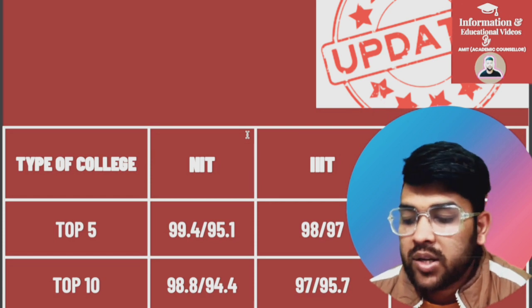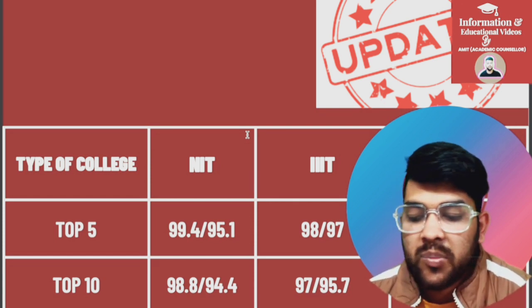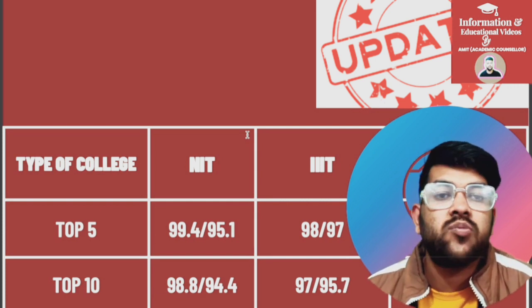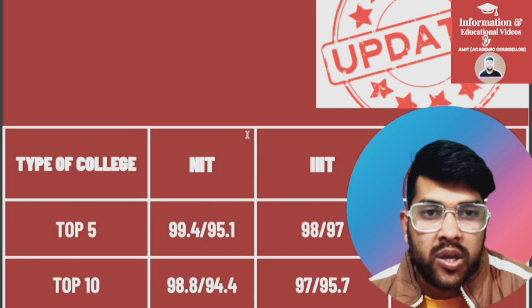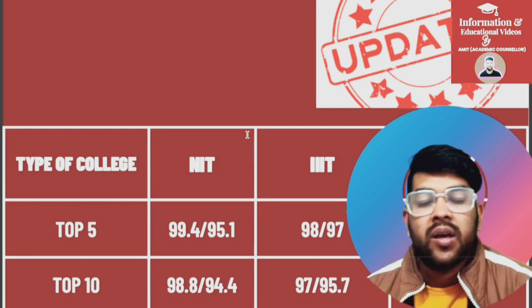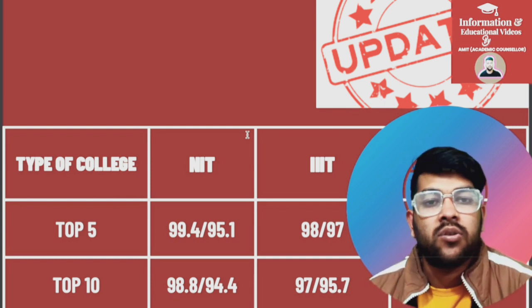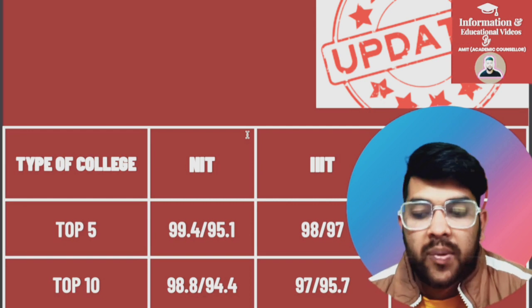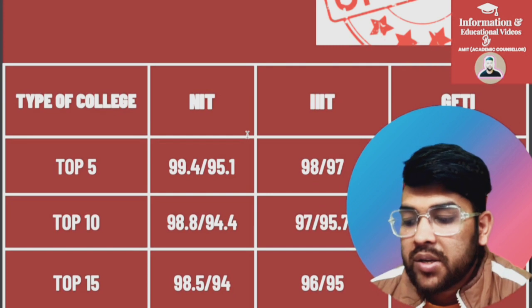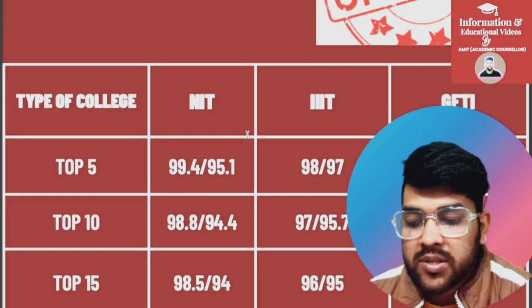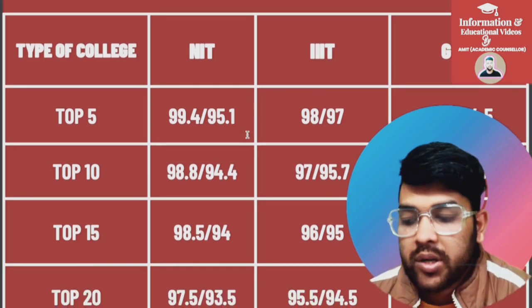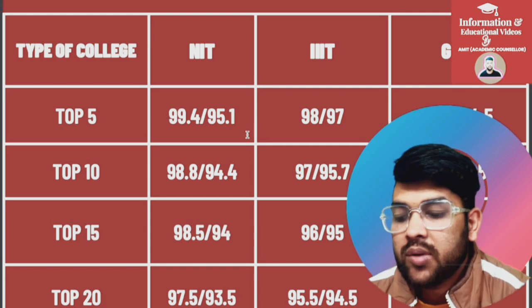For top 10 NITs, it is 98.8 and 94.4 percentile (CSE slash lower branch). For Triple IT: 97 and 95.7. For GFTI: 94 and 90.5 percentile. After the slash is for the lower branch; before the slash is for the CSE branch. For top 15 NITs: 98.5 and 94 percentile. For Triple IT: 96 and 95. For GFTI: 93.5 and 90.9 percentile. Note: home state/other state quota only applies to NITs, not Triple IT or GFTI.